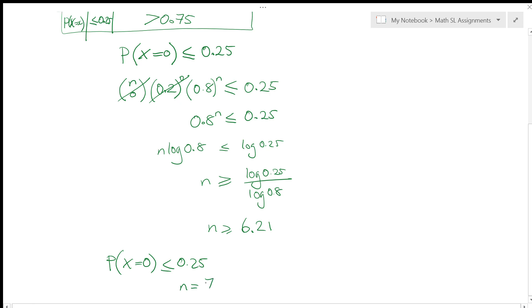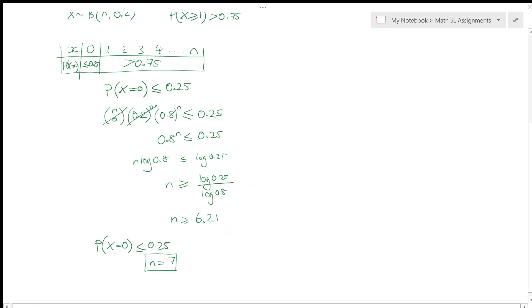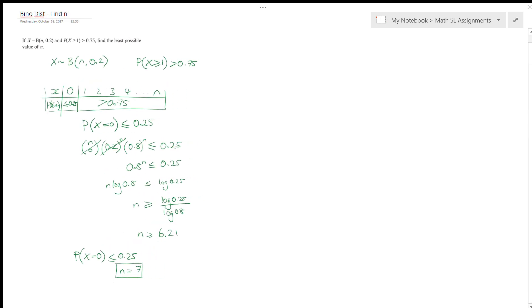So the next value of n is 7. So n needs to be equal to 7. That is the least number of times. So we go back to the question. What is the least number of times that I can repeat this process so that the probability that x is greater than or equal to 1 is bigger than 0.75.